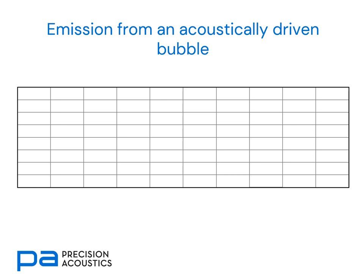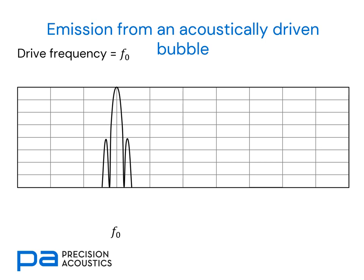Let's consider the acoustic emissions that we might see from an acoustically driven bubble. If we're driving the bubble at a fundamental frequency F0, we'll clearly expect to see that signature, and there will be some degree of spectral bandwidth either side as shown on the diagram. The first feature we'd expect to see from a cavitating bubble would be other spectral peaks and harmonics — integer harmonics of the fundamental — and the second and third harmonics are shown on screen in red.